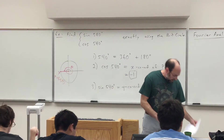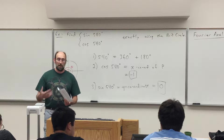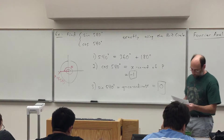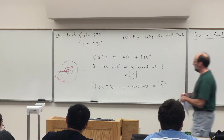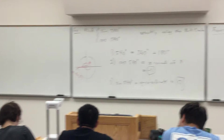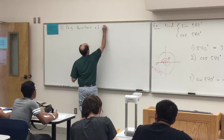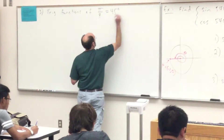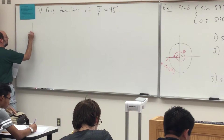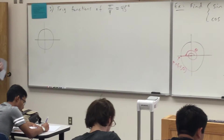Moving right along — we've done quadrantal angles, so now let's do certain angles that are not quadrantal and find the exact values of trig functions. Starting with pi over 4, which is 45 degrees. We want the trig functions of pi over 4 radians, or 45 degrees.